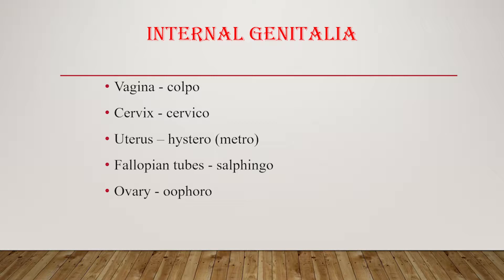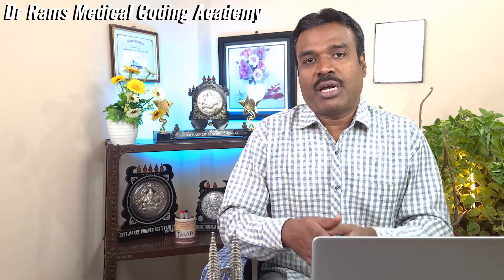The vagina leads to a structure called the cervix. The cervix forms the neck of the uterus and is at the lower region of the uterus. The uterus, which we call the womb, is referred to medically as 'hystero' or 'metro.' It contains the convex-shaped body called the uterine fundus and the corpus or uterine body. The uterus is made up of various layers: the innermost mucous membrane called the endometrium, the middle muscular layer called the myometrium, and the outer region called the perimetrium.